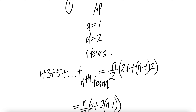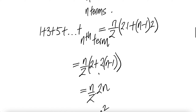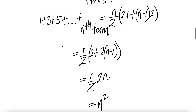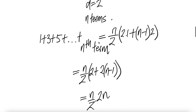The number of terms is n divided by two, times the first term plus n minus one times the common difference, which is two. The two and n minus two cancel, you get two n. Then two and two cancel, you get n squared. So we're able to show that when we add the first n odd terms, the sum is equal to n squared.